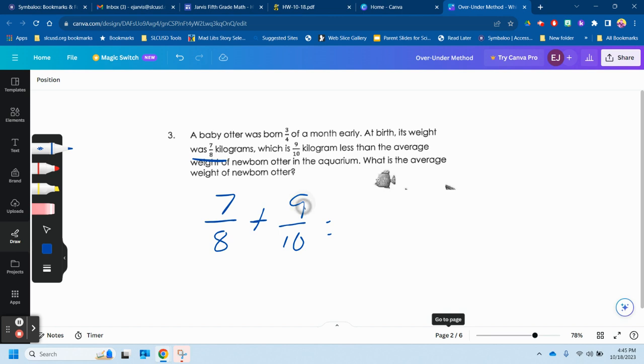Now here's the tricky part. I can't add eighths and tenths. I need to find a common denominator. So I start with a larger number and I write multiples. Are any of these multiples divisible by eight? 10, no. 20, no. 30, no. 40 though, yeah. Eight times five is 40.